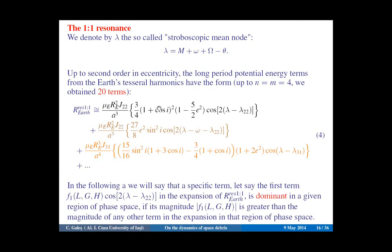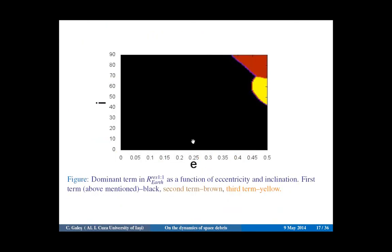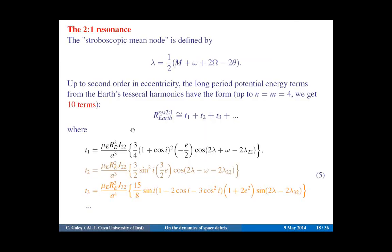We say that a specific term is dominant in a given region of phase space if its magnitude is greater than the magnitude of any other term of the expansion in that region. Following this definition, we computed the plot of the dominant terms as a function of eccentricity and inclination. The first term in black dominates in almost all regions of the phase space. Detailed analysis shows that its magnitude is much larger than any other term, at least for small eccentricities and inclinations.